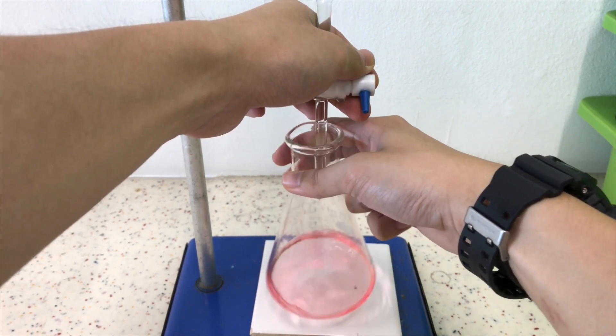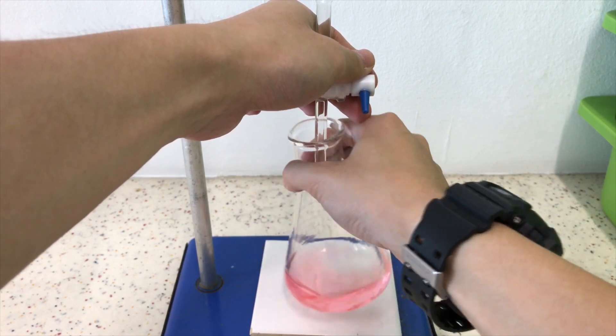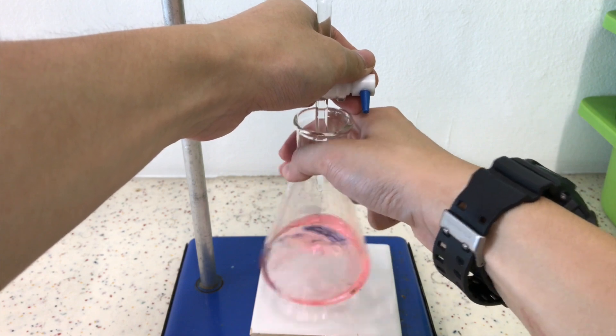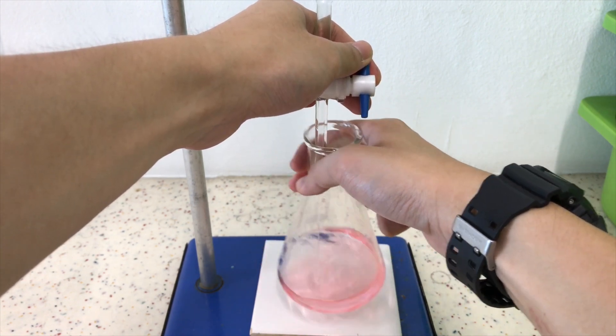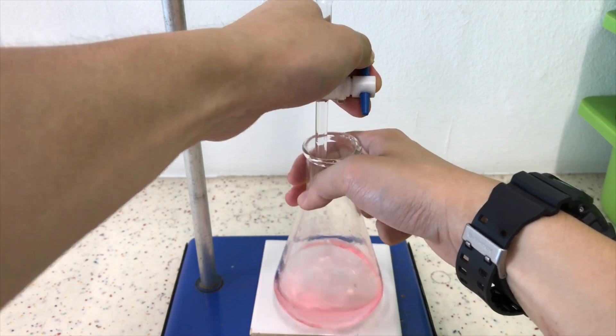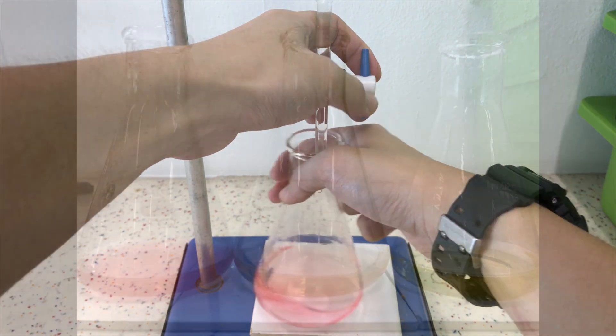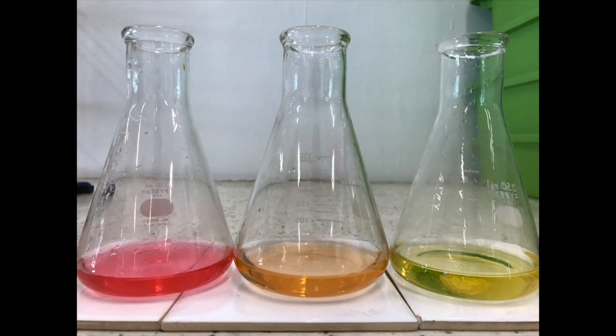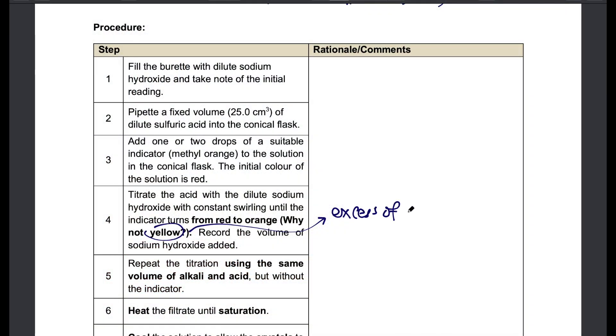Instead of what I did just now which is just to pour one solution into the other, we will do a titration in which we will add the alkali from a burette so we can control it very carefully with dropwise addition using the tap. Add it until the indicator changes color. We will stop when the indicator changes from red to orange because that's just nice complete neutralization. If it's yellow that means the pH has gone up too high and you have added an excess of alkali.